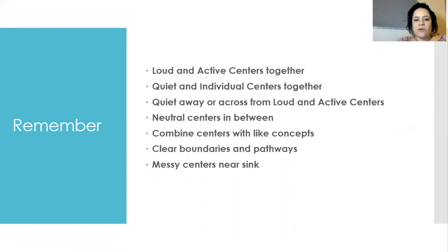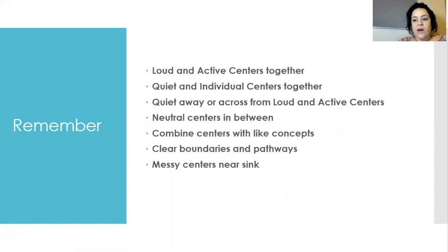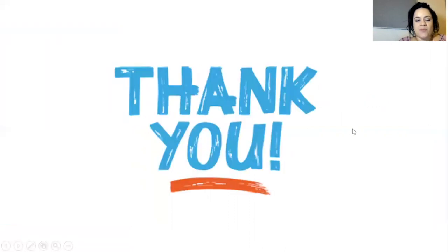In conclusion, just a quick recap: we want our loud and active centers together, and our quiet individual or small group areas together. Put your quiet and loud active centers on separate parts of the room as far away as possible. We want our neutral centers with mild mobility right in the middle to divide the space. If you're limited on space, be creative — combine centers with like concepts: loud areas together, quiet areas together, math and science together, music and dramatic play together. Use your furniture to create clear boundaries. Use pictures and signs. Make sure children can move freely and safely in and out of their centers. Remember that messy centers are important and essential — place them near a sink for easy cleanup. On behalf of our KEYS family, we want to thank you for your time, and good luck.